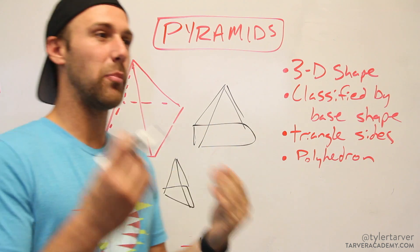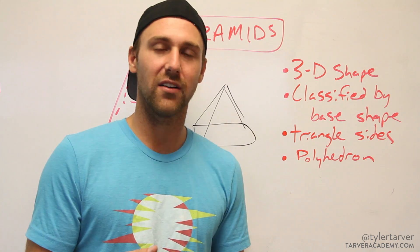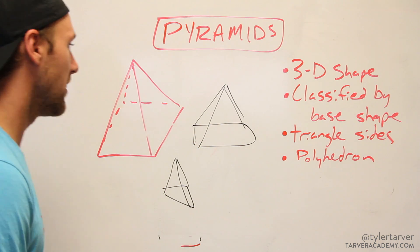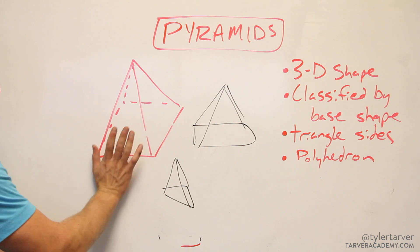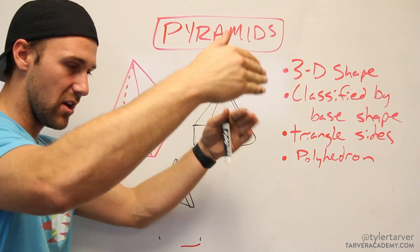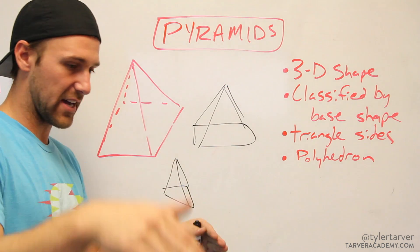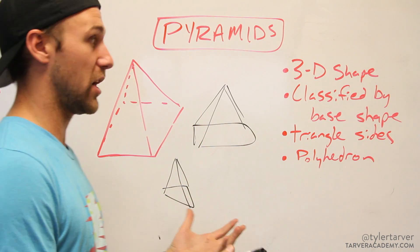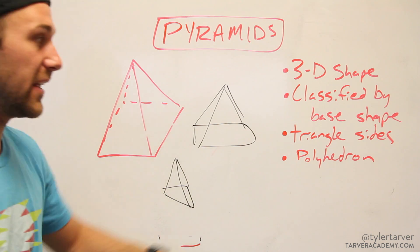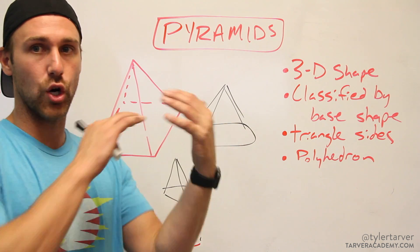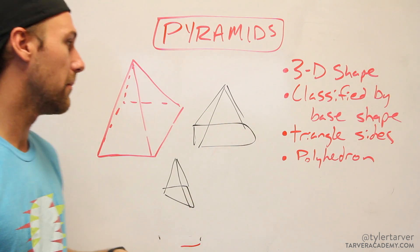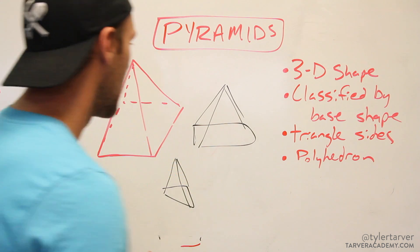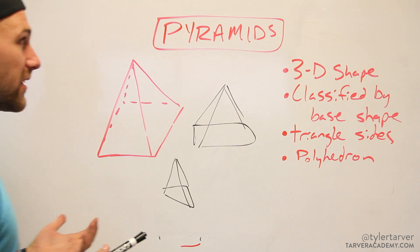It's classified by the base. The base is our most important part because that's what we name it from and where the majority of the information comes from. Other than that, it's built with triangles — triangular sides that go from the edges of the base and fold up to a point. It is a polyhedron because it has straight lines and edges, not curved like a sphere.